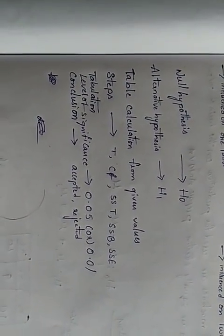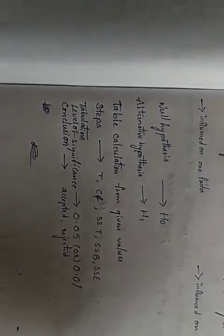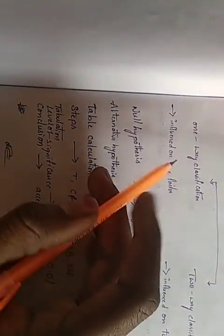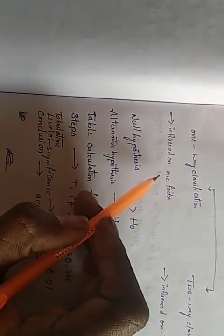For solving ANOVA problems, we follow these steps: state the null and alternative hypotheses, set up the table, perform calculations, determine the level of significance, and state the conclusion.